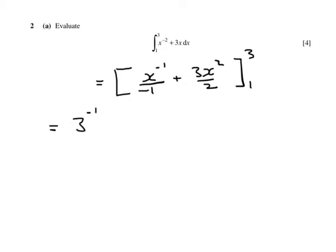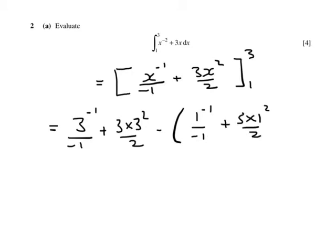Substitute in 3 first, so 3 to the power minus 1 over minus 1, plus 3 times 3 squared over 2. And from that I'm going to subtract 1 to the power minus 1 over minus 1, plus 3 times 1 squared over 2. Typing that into my calculator, I'll get an answer of 12 and 2 thirds.